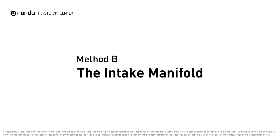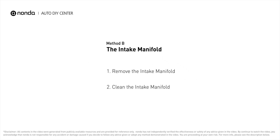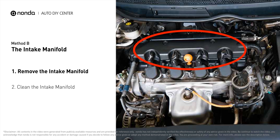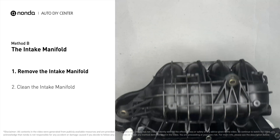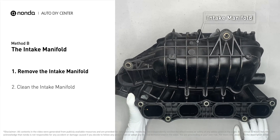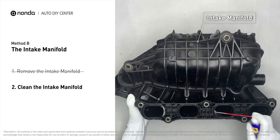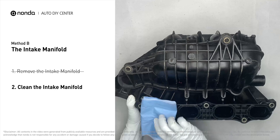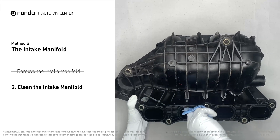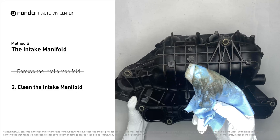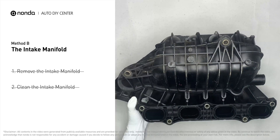Method B: the intake manifold. The intake manifold sits on top of the engine and plays a key role in the combustion process. First, carefully remove the intake manifold from the engine. Use the WD-40 cleaner to clean up the crud inside the intake manifold and wipe it well to make sure all the carbon buildup is removed. Reinstall the intake manifold back after the cleaned intake manifold has dried.